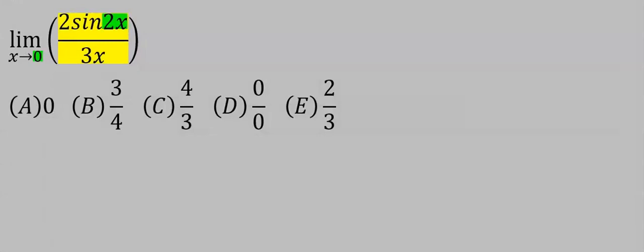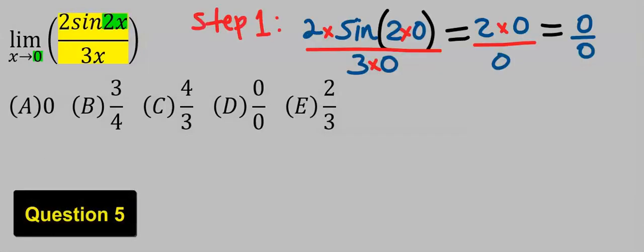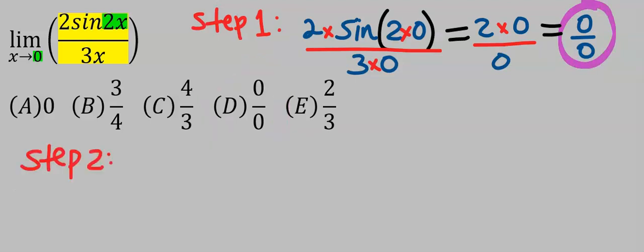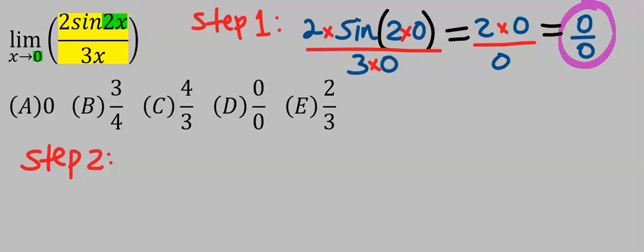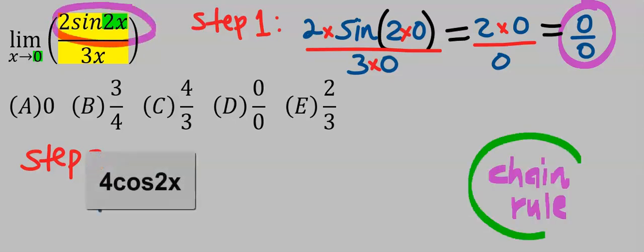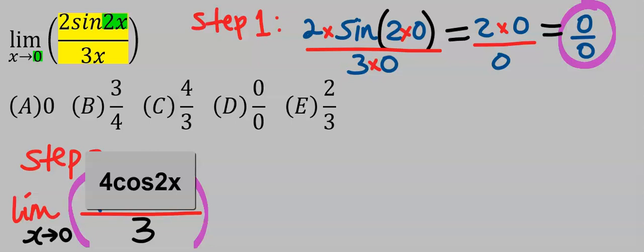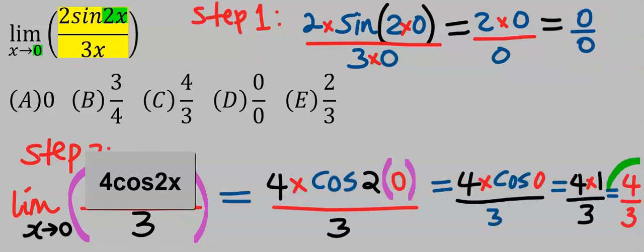Next, let's consider this question. Step one: apply direct substitution and we get zero over zero. If you stop there, you fail. Step two: apply L'Hôpital's rule — differentiate the numerator and denominator separately. Differentiate 2 sin 2x by chain rule; differentiate 3x to get 3. Take the limit as x tends to zero and, solving carefully, the answer is 4 over 3. From the options, our answer is C.